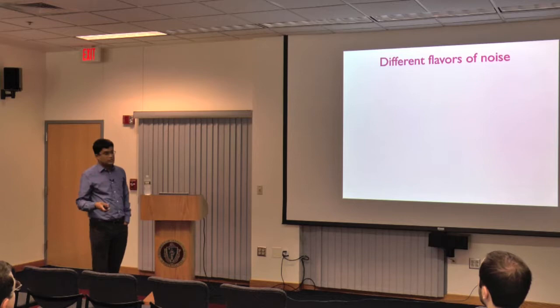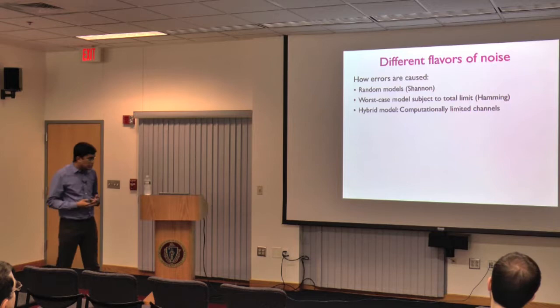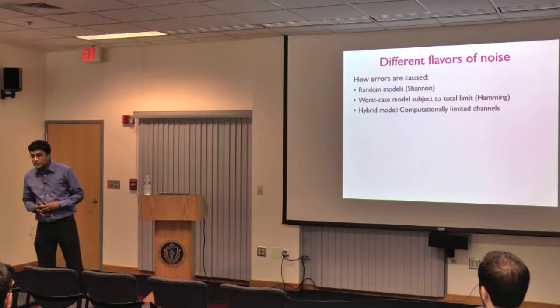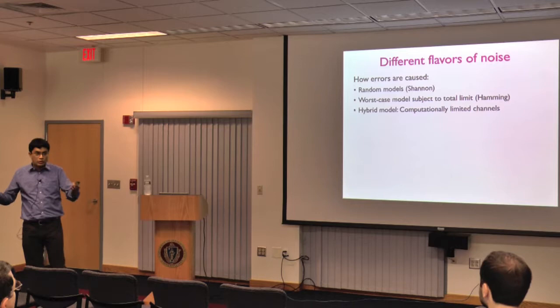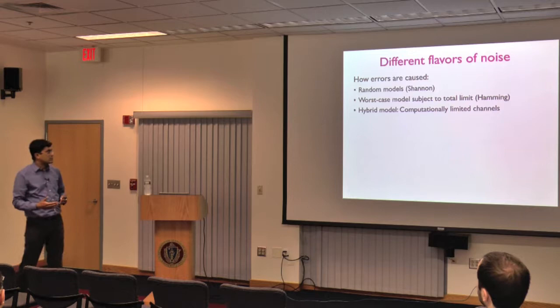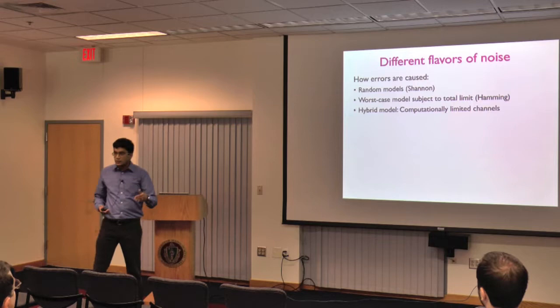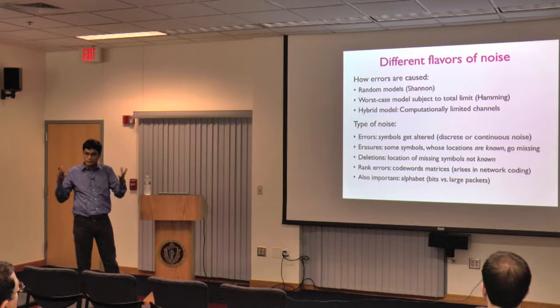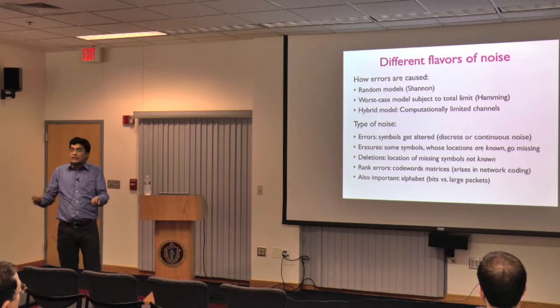Noise can come in different flavors. Errors could be caused randomly, as Shannon modeled, or the channel can do anything it wants subject to a total limit on errors — a combinatorial worst-case view pioneered by Hamming around the same time. There are also hybrid models somewhere between Shannon's optimistic and Hamming's pessimistic views.